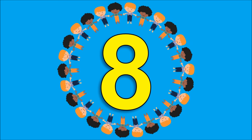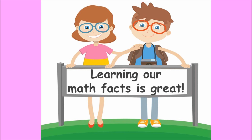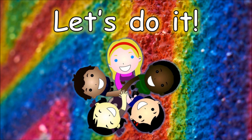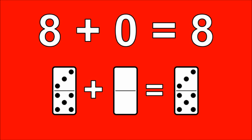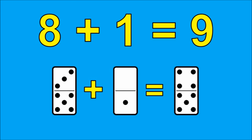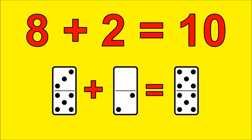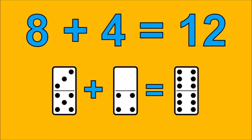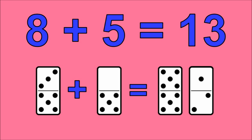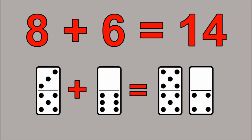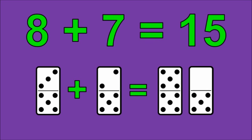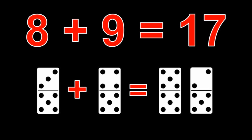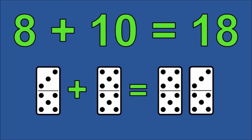Come on everybody, let's add by eight. Learning our math facts is great. Come on everybody, let's add by eight. Well there ain't no need to wait. Let's do it. Eight plus zero is eight. Eight plus one is nine. Eight plus two is ten. Eight plus three is eleven. Eight plus four is twelve. Eight plus five is thirteen. Eight plus six is fourteen. Eight plus seven is fifteen. Eight plus eight is sixteen. Eight plus nine is seventeen. Eight plus ten is eighteen.